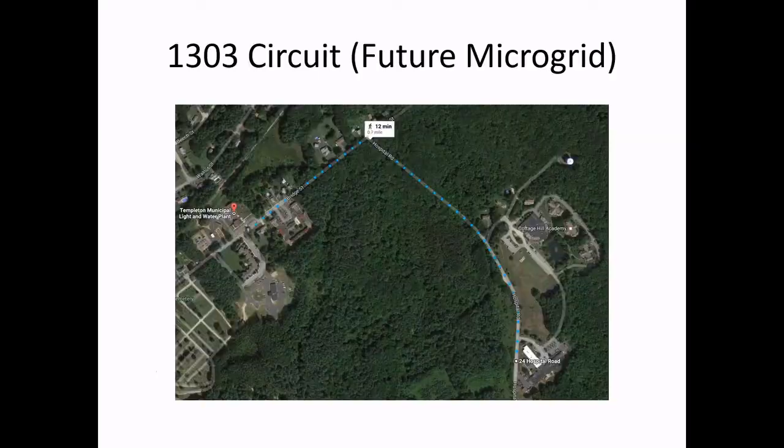Regarding resiliency and future microgrid potential: the 1303 circuit, one of four circuits coming out of the Templeton substation, serves quite a few critical care facilities — a residential treatment facility, a nursing home, and a senior housing facility, all within less than a mile of that circuit. The decision was made to install the battery on that 1303 circuit so that in the future, with additional switching, it would be relatively easy to island it and provide up to 24 to 36 hours of backup power to these critical pieces of infrastructure during an ice storm or other natural disaster.